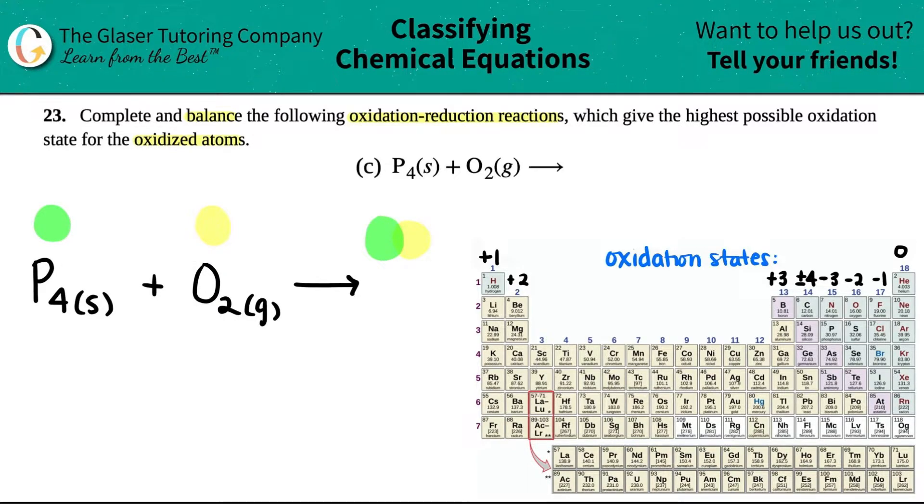But now here's the question, which one is going to be oxidized and which one is going to be reduced? Remember, the oxidized atom is always going to be losing electrons. And if they're losing electrons and electrons are negative, that means that they're going to look like they're getting more positive. So we got to figure out which one is going to be oxidized.